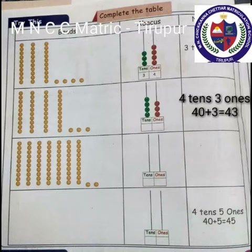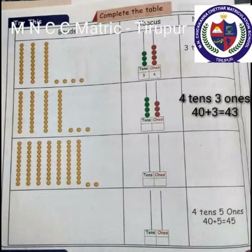Next: Abacus numbers. See the beads. First one: 10 beads, another 10, another 10 — that is 3 tens. Then 1, 2, 3, 4 — four 1s. Therefore, 3 tens plus 4 ones equals 34.